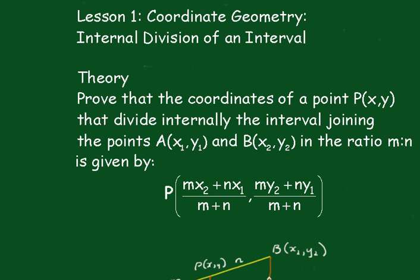Prove that the coordinates of the point P(x,y) that divides internally the interval joining the points A(x1,y1) and B(x2,y2) in the ratio m to n is given by the coordinates (mx2 + nx1)/(m + n) and (my2 + ny1)/(m + n).